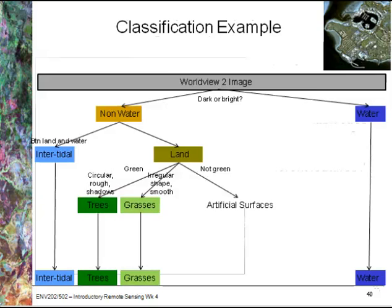I can break down land further by first questioning if it's green or not green. If it's not green, I'll suggest it's artificial surfaces. If it is green, then I can look at other features — circular, rough, with shadows, in which case they might be trees. Or are they irregular in shape and smooth? In which case, it would be grasses.